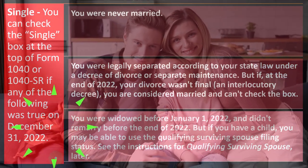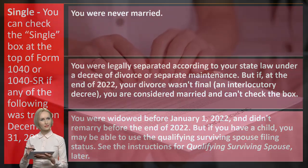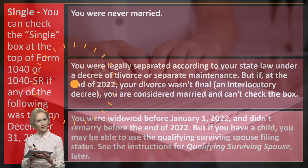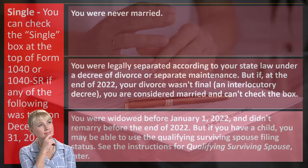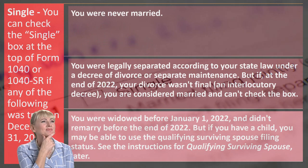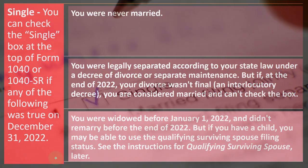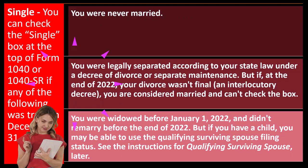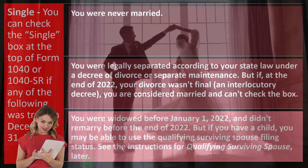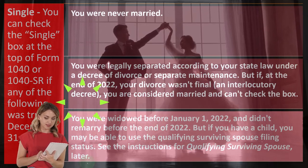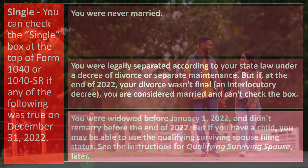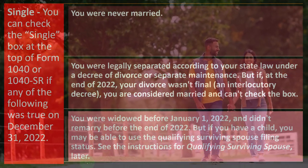If you were married and your spouse died, the question from a filing status standpoint is whether that reverts you back to single or allows you to claim qualifying surviving spouse status. To get the more favorable qualifying surviving spouse status, you generally need to have a child. If you remarry, you can no longer qualify for qualifying surviving spouse — you'd be filing married filing joint or married filing separately.